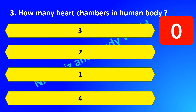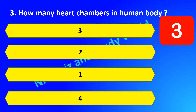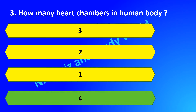How many heart chambers are there in a human body? Is it 3, 2, 1, or 4? The answer is 4.